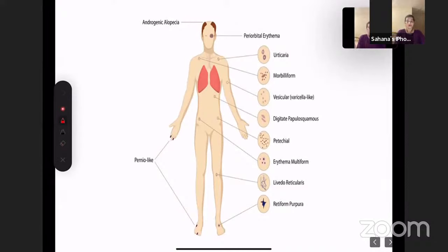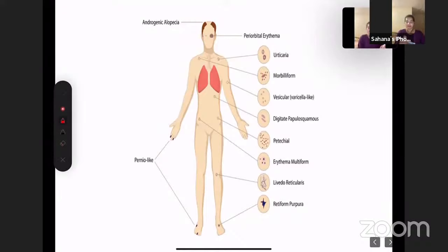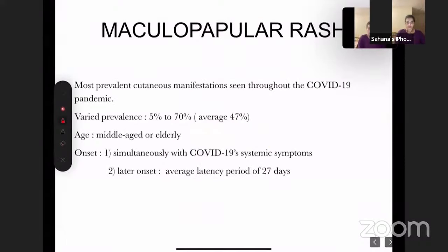One study found that men who suffered from COVID developed androgenetic alopecia afterward, and people who already had androgenetic alopecia were more prone to severe COVID. The diagram also shows urticaria, morbilliform rash, vesicular rash, and petechial rash as brief introductions. The first and most common cutaneous manifestation is the maculopapular or morbilliform rash, which was the most prevalent finding throughout the pandemic across studies performed in almost all countries.